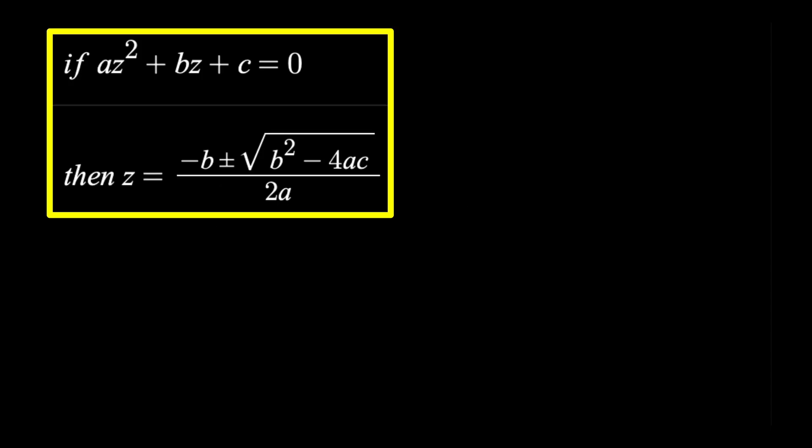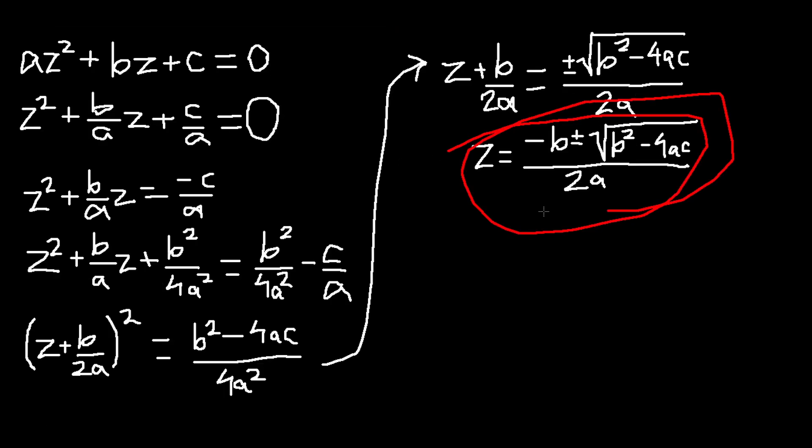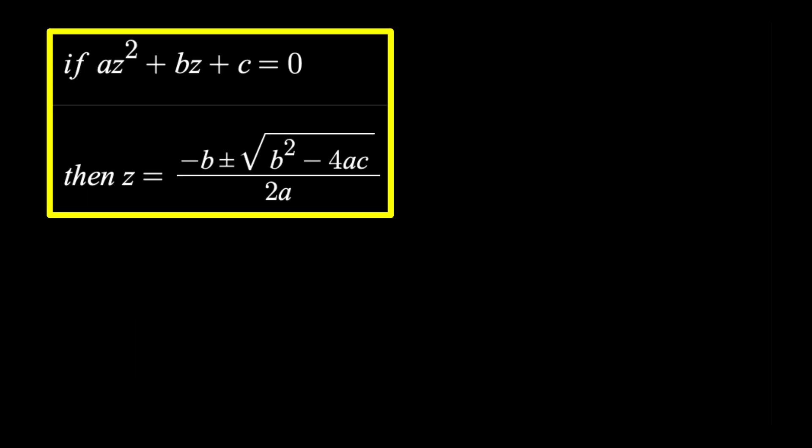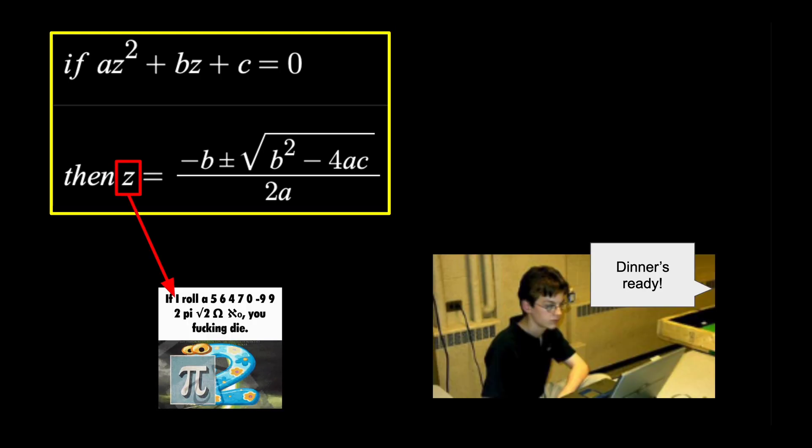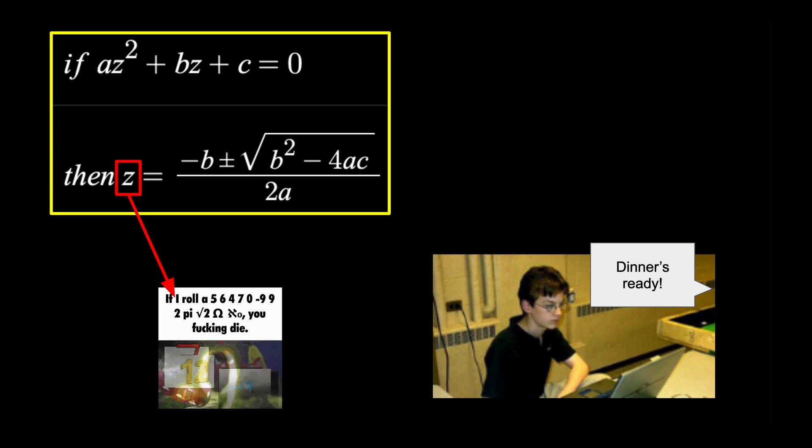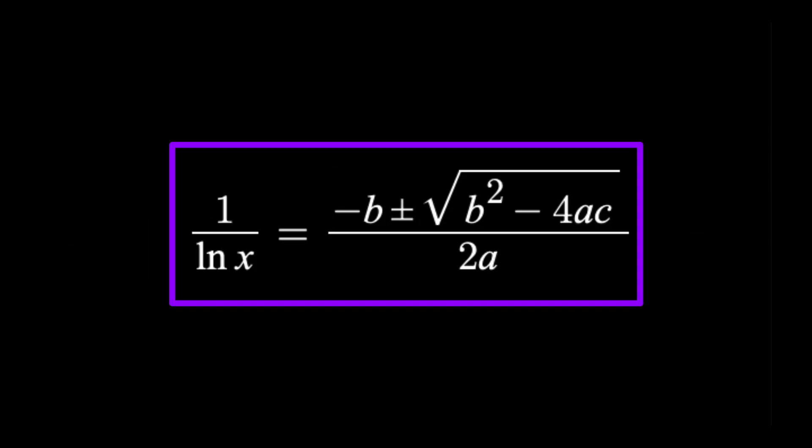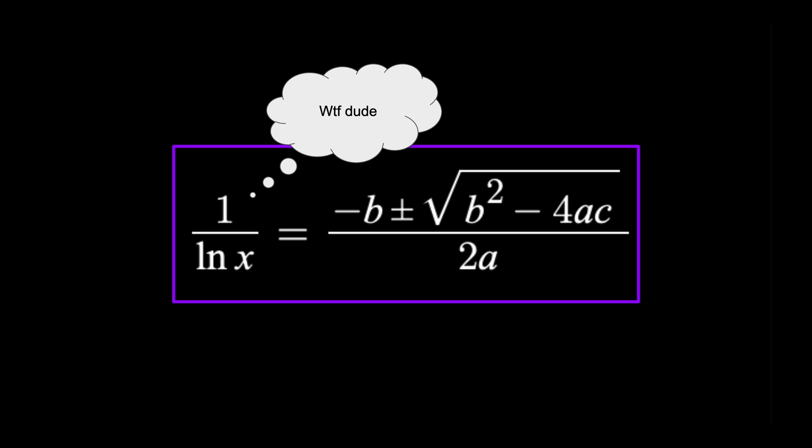This is the quadratic formula. Here's how you derive it. This version tells you the value of z in this particular equation. But just like you, z can be any variable, even if it is dependent on something else. Essentially, you can apply the formula to any equation of this form. This doesn't mean you'll have to solve for yet another variable once you've used it, however.